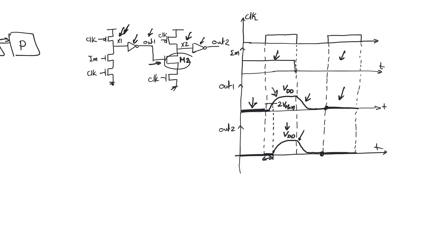This is also the reason why NP-Logic solves the cascading problem: it allows us to obtain an output that starts at zero and either rises or remains at zero. But in that case, the output comes from a P-stage, not from the output of a static CMOS inverter.